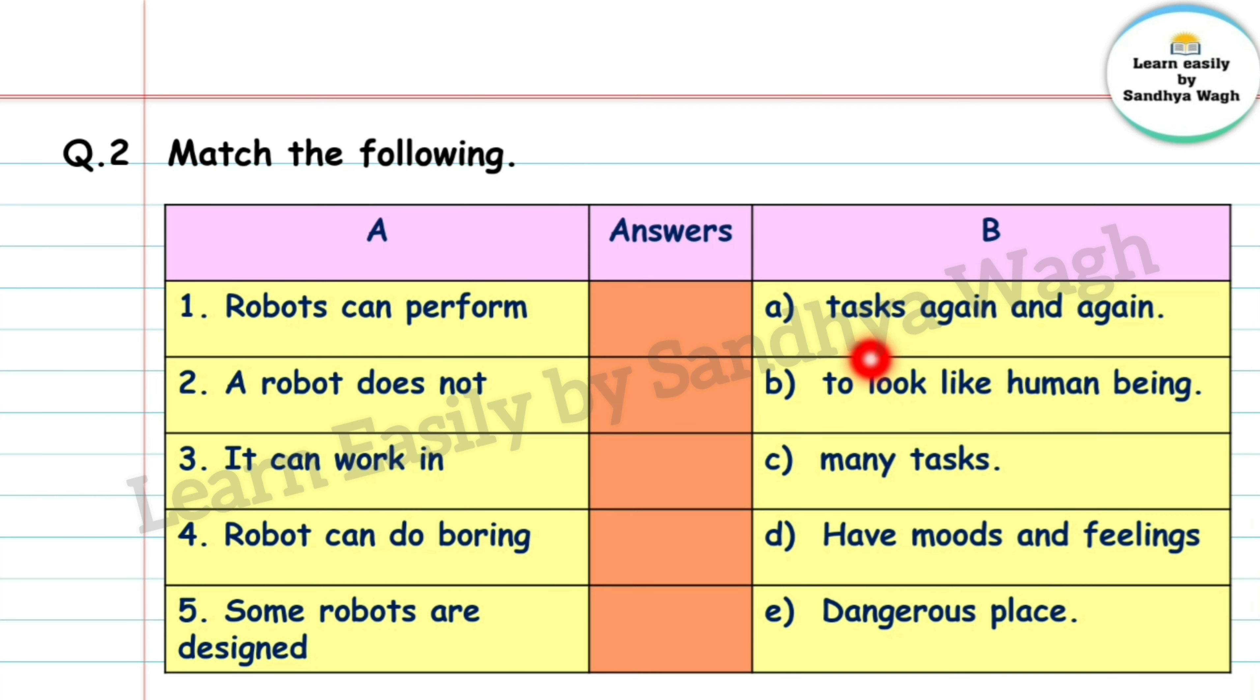Robots can perform - many tasks. A robot does not have moods and feelings, so answer is d.